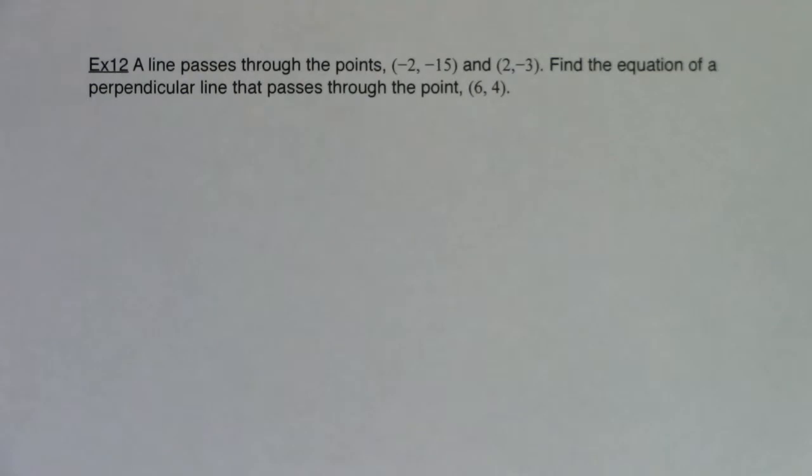Hey Math 31, welcome to our last example. We have a line passes through the points (-2, -15) and (2, -3). Find the equation of a perpendicular line passing through the point (6, 4).